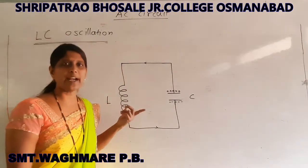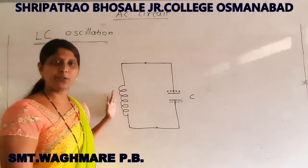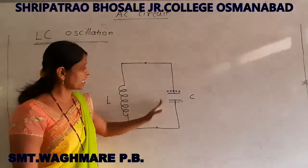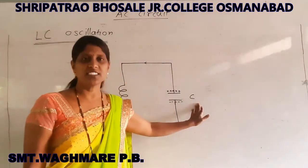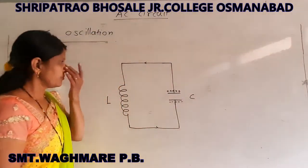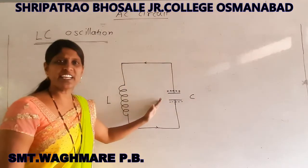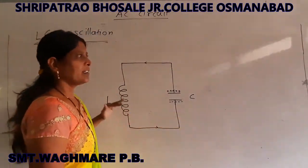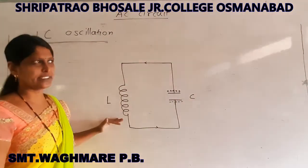By Lenz's law, we know that when there is a change in magnetic flux, an EMF is induced in the coil. This induced EMF opposes the current due to the charged capacitor. Due to this opposition, the capacitor starts discharging, and the electrostatic energy of the capacitor starts to decrease. As the electrostatic energy decreases in the capacitor, the energy in the inductor increases by the same amount.